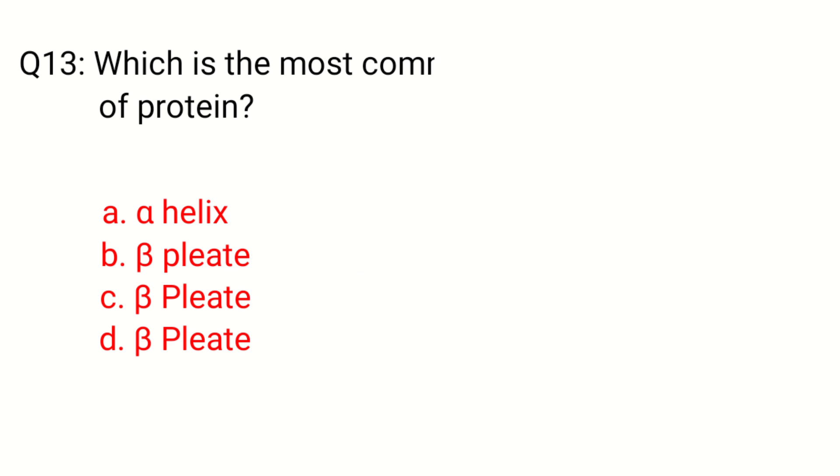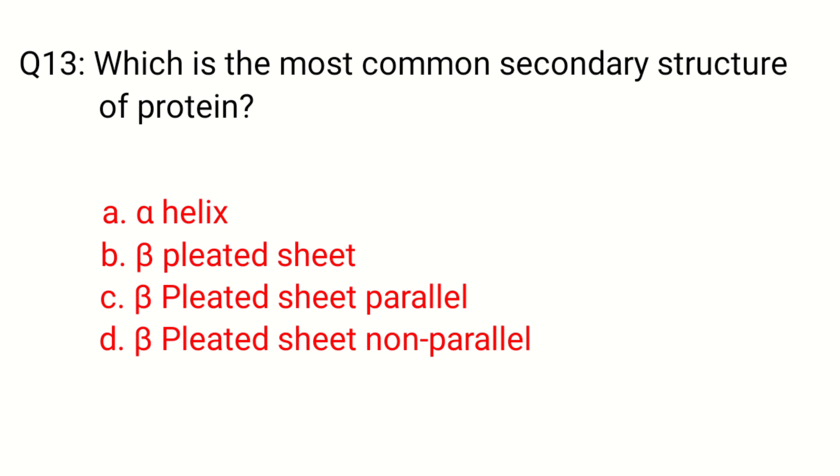Question 13. Which is the most common secondary structure of protein? The correct answer is option A, Alpha-helix.